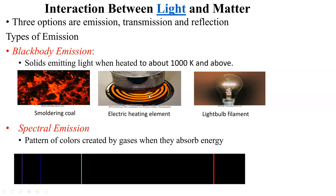So those are the two emission types: black body emission, where the object emits light itself due to heat, and spectral emission, where you put energy into an atom or element to produce a very specific pattern of colors which you can use to identify that element.